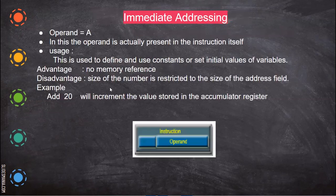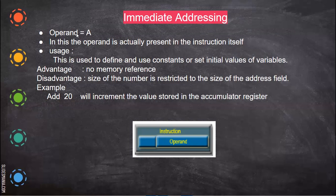The next addressing mode is immediate addressing. In immediate addressing, the data is present in the operand itself — one of the operands will be the data itself, present directly in the instruction. There is no memory reference, and the size of the number is restricted to the size of the address field.